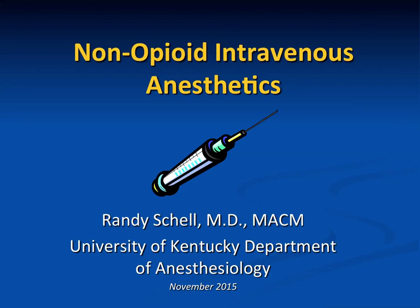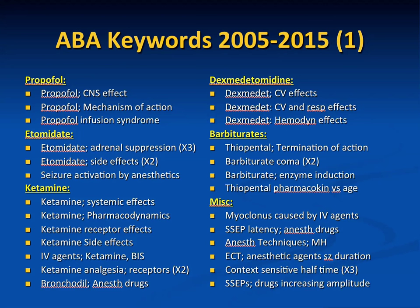We'll first look at the American Board of Anesthesia keywords distributed from 2005 to 2015 on non-opioid intravenous anesthetic topics. First, propofol: effects on the central nervous system, its mechanism of action, and propofol infusion syndrome. Then etomidate: adrenal suppression, side effects of etomidate, seizure activation by anesthetics — probably etomidate was central to this question.